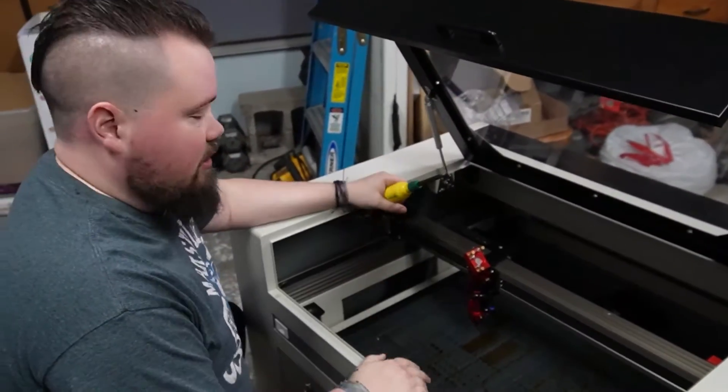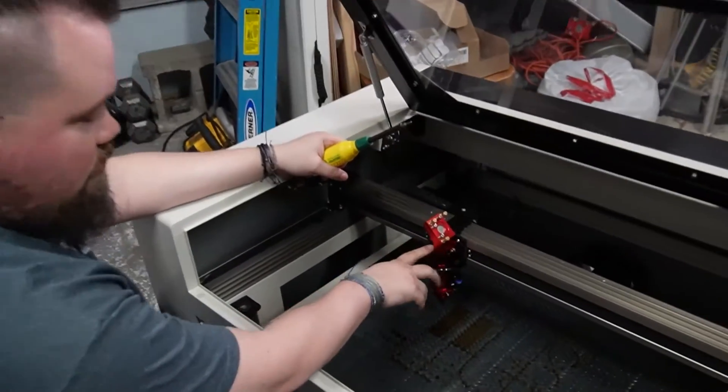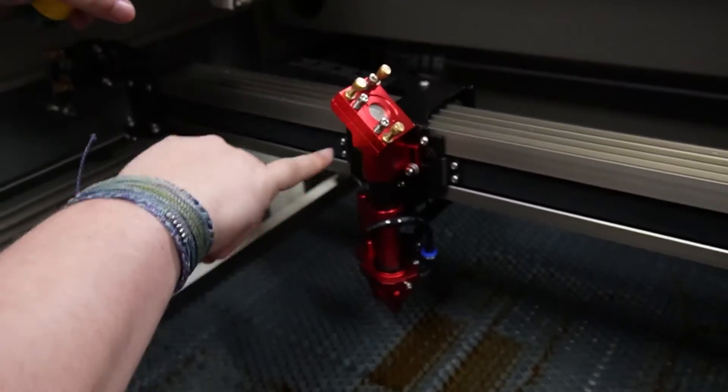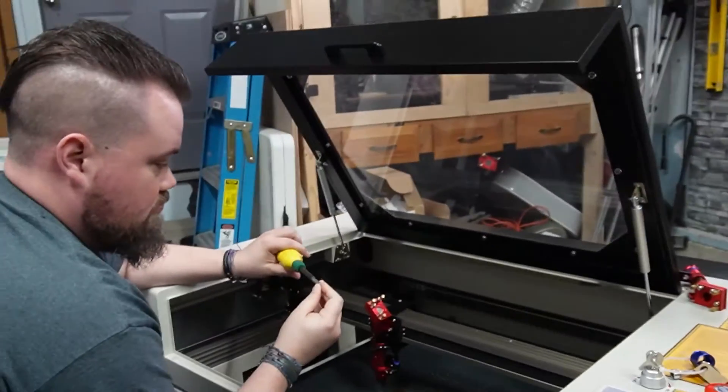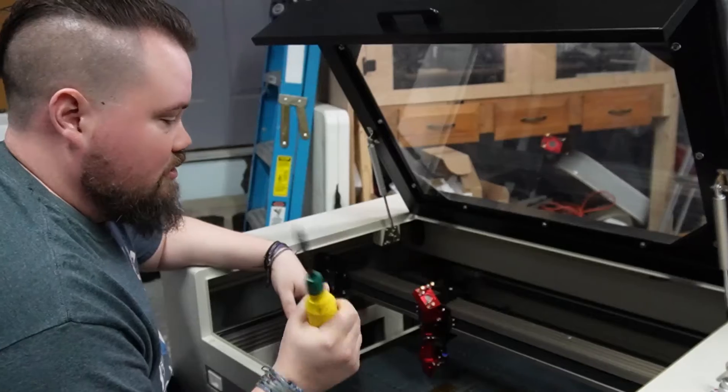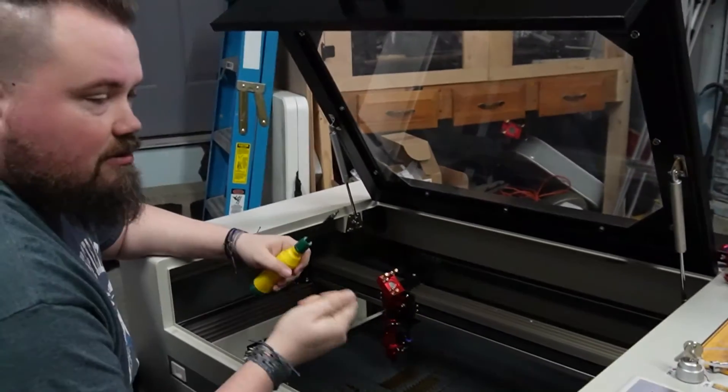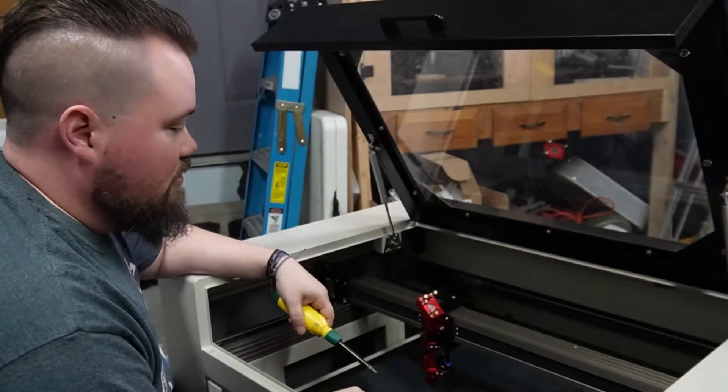From the looks of things it's going to be two little bolts on either side. They're allens. Looks like they're number three. It did not get shipped with an allen wrench at all, so you will need your own.